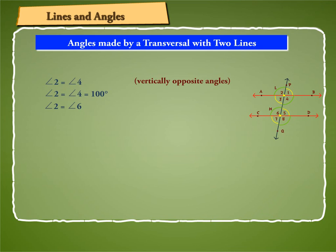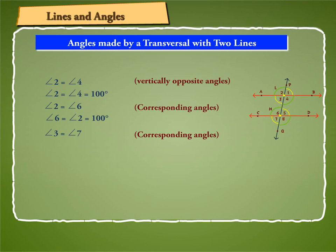Angle 2 and angle 6 are corresponding angles, so angle 6 is equal to angle 2 is equal to 100 degrees. Similarly, angle 3 and angle 7 are corresponding angles, so angle 7 is equal to angle 3 is equal to 80 degrees. Lastly, angle 4 and angle 8 are also corresponding angles, so angle 8 is equal to angle 4 is equal to 100 degrees.